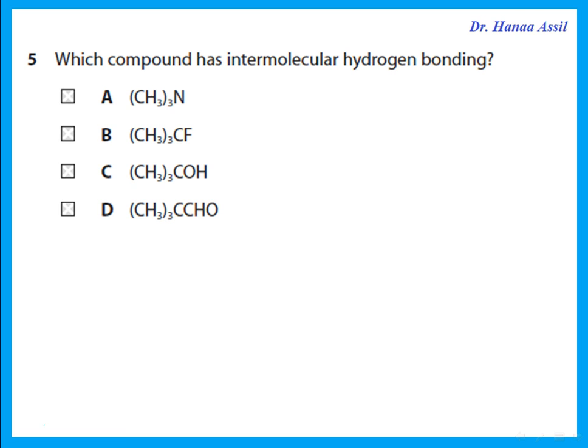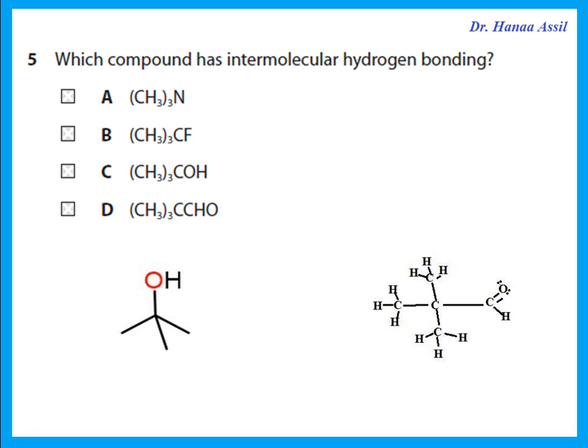Which compound has intermolecular hydrogen bonding? To form hydrogen bonding, there must be hydrogen attached to an electronegative element. Choices A and B don't have hydrogens bonded to the electronegative element, so they're eliminated. Between C (a tertiary alcohol) and D (an aldehyde), in the aldehyde the hydrogen is not attached to an electronegative element. Only the alcohol has hydrogen attached to the electronegative oxygen, so it will form intermolecular hydrogen bonds.